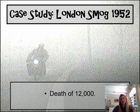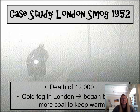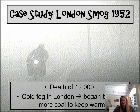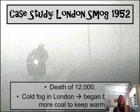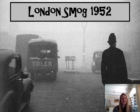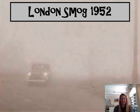A very famous thermal inversion event happened in London in 1952, called the London Smog Event. A thermal inversion hit London, and because the cold air was trapping so many pollutants, it led to many deaths. Because it was so cold, people kept burning coal — their main energy source — which released more pollutants into the air, worsening the situation as the cold air trapped those pollutants near the surface.